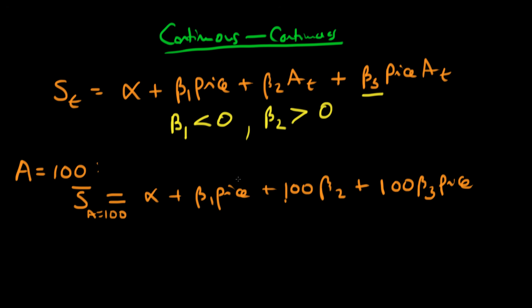Okay, so what has this shown us? Well, we can actually think about the effect of price, because price is appearing twice in our model here. We can combine the price variables to create an aggregate effect of price. So here we would have the aggregate effect of price would be beta 1 plus 100 beta 3, and then that would all be multiplied by the price.